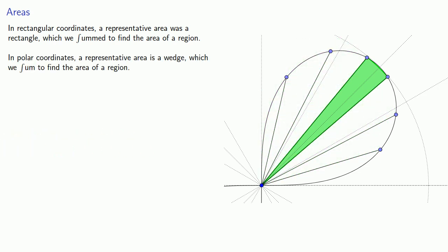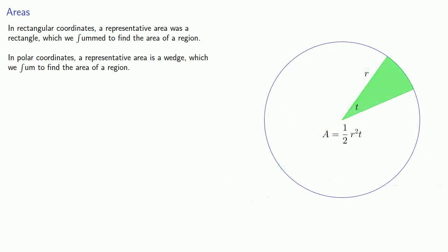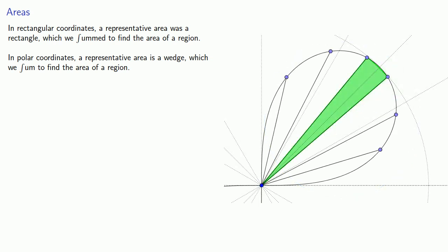Now these areas are actually circular sectors, and so we know from geometry that the area of a circular sector with radius r and central angle t is going to be 1/2 r squared t. Since these wedges have central angle very small bit of theta, the area of a representative wedge will be 1/2 r squared d theta.